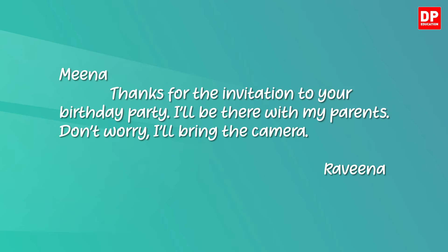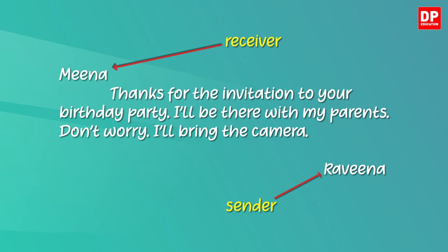Let's read it. Meena, thanks for the invitation to your birthday party. I'll be there with my parents. Don't worry, I'll bring the camera. Raveena. In this note, Meena is the receiver — in other words, this note is written to Meena. Raveena is the person who is sending the note; she is the sender.